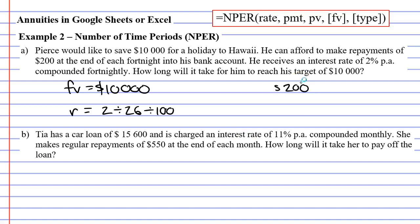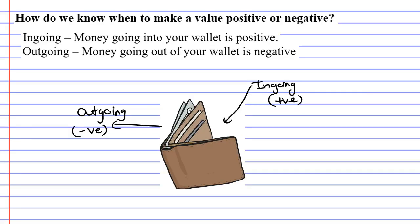We also have a repayment of $200. Microsoft Excel and Google Sheets use PMT to represent our repayment. We need to be careful because sometimes we put a negative in front of our value. Repayments are always negative. Let's look at our wallet to understand why. Any money that comes out of our wallet is negative because it's money we can't spend, and any money that goes into our wallet is positive because that's money we can spend. Our repayment PMT of $200 is negative because that money is coming out of our wallet and going into the bank account.